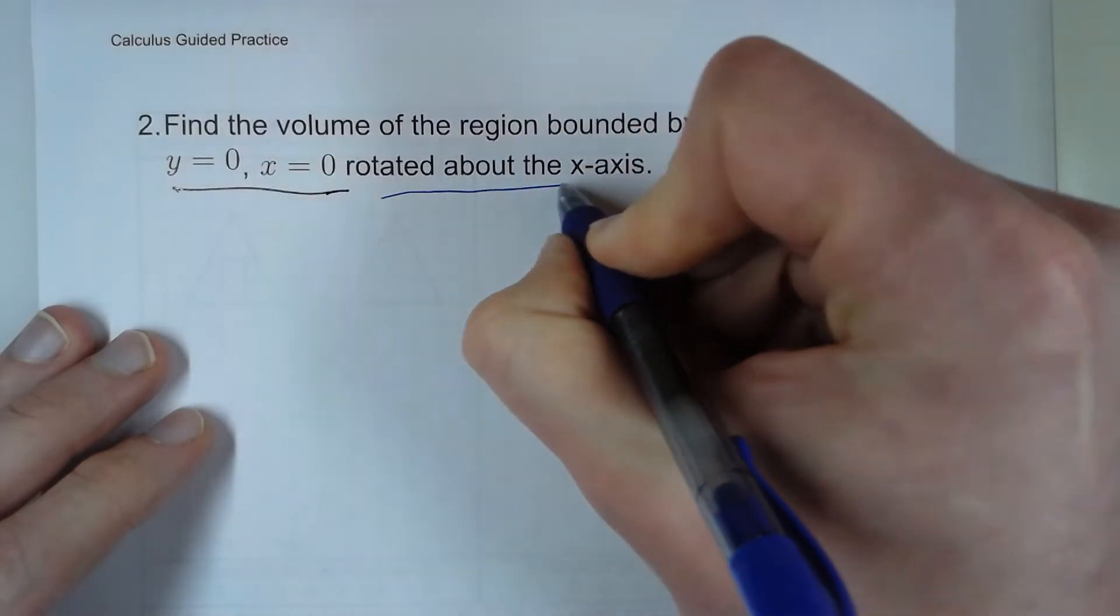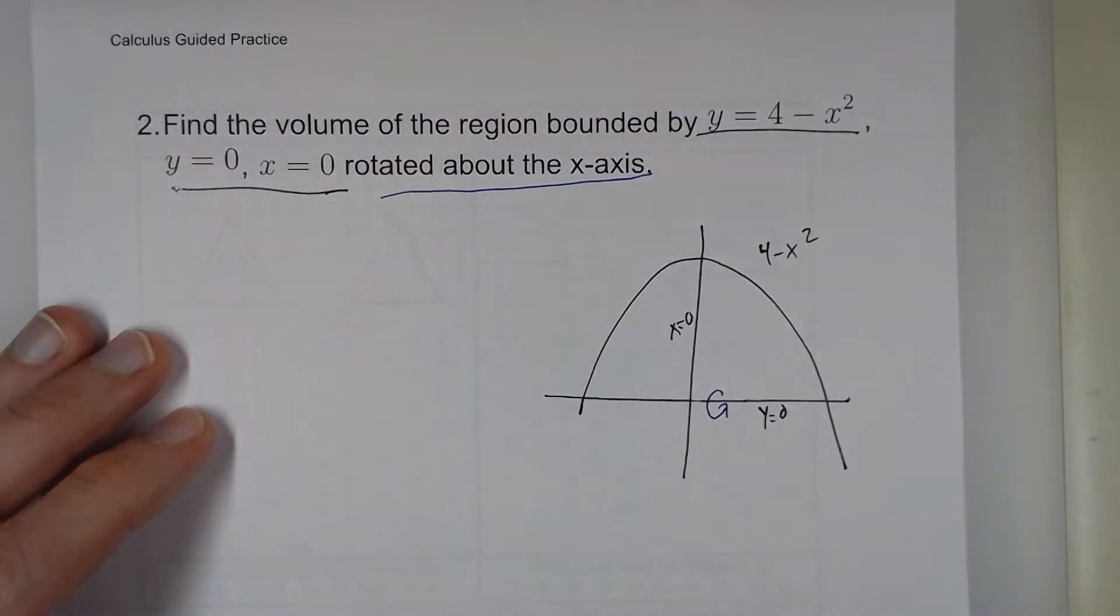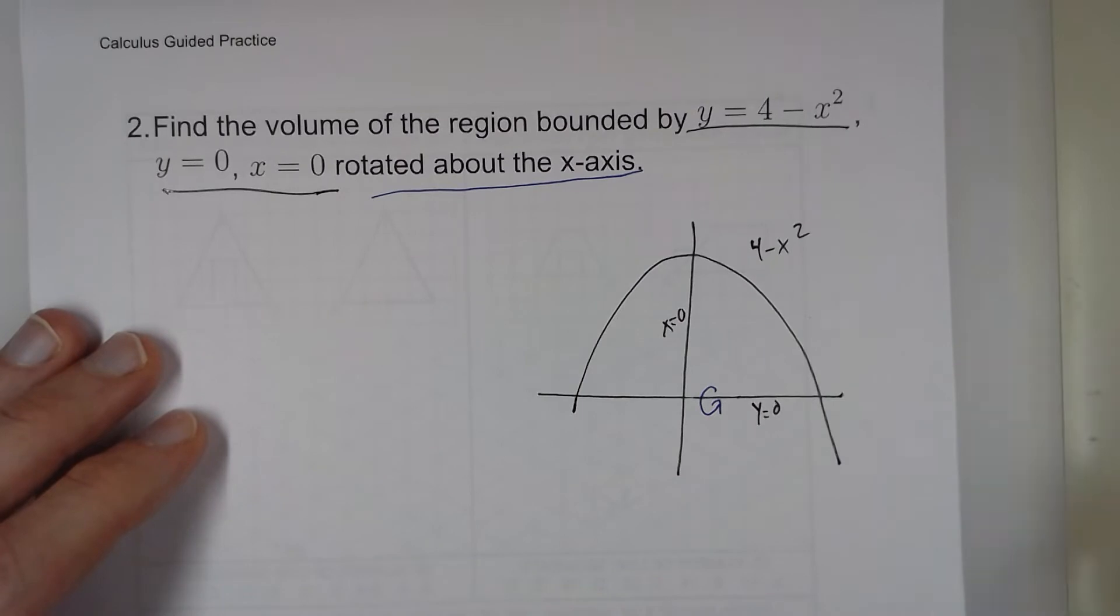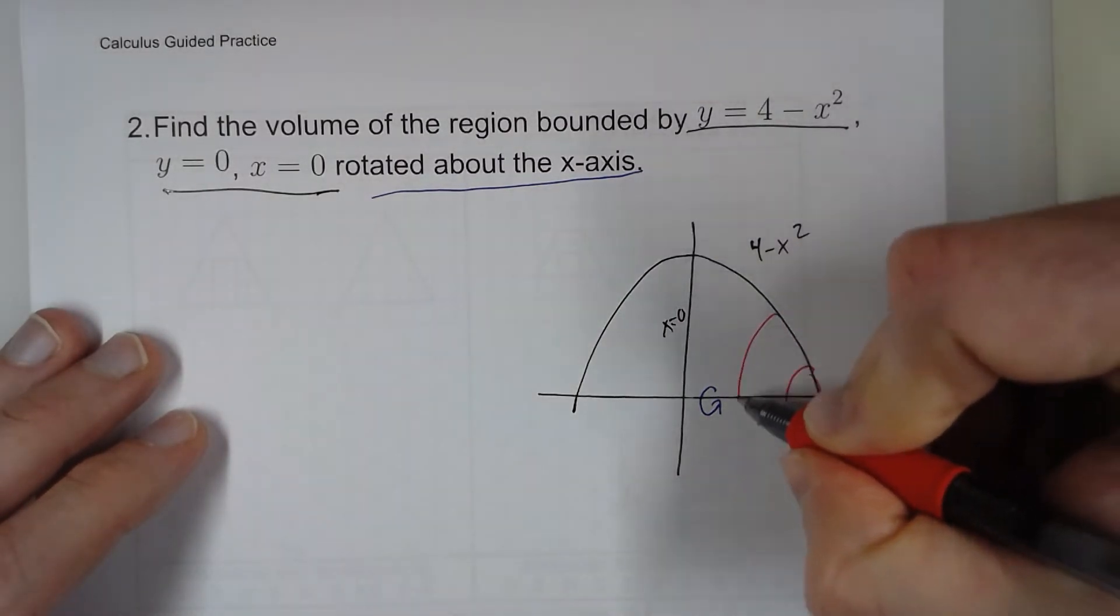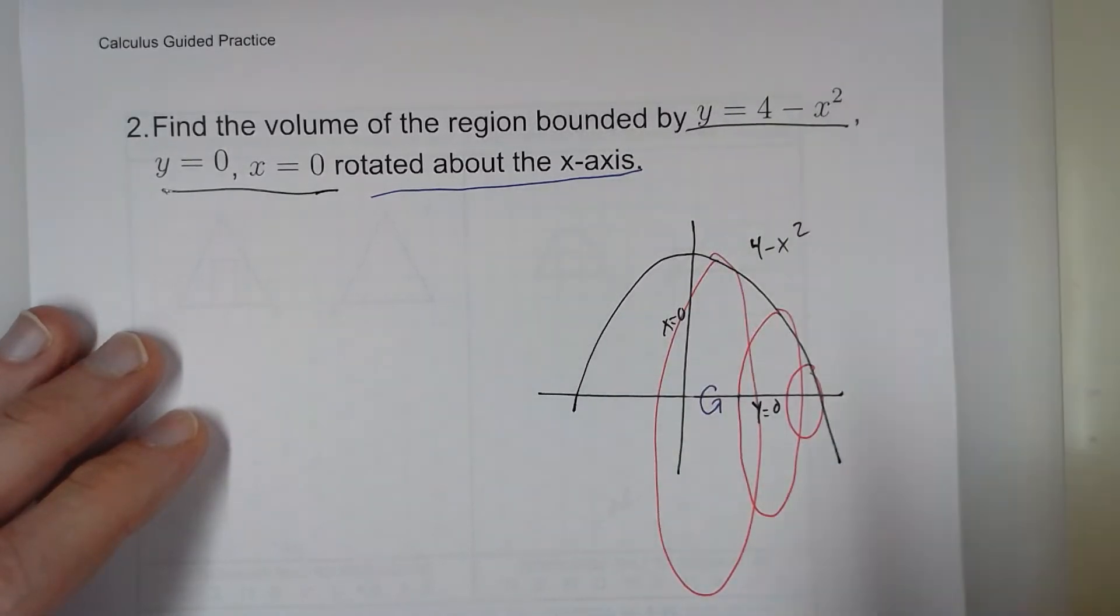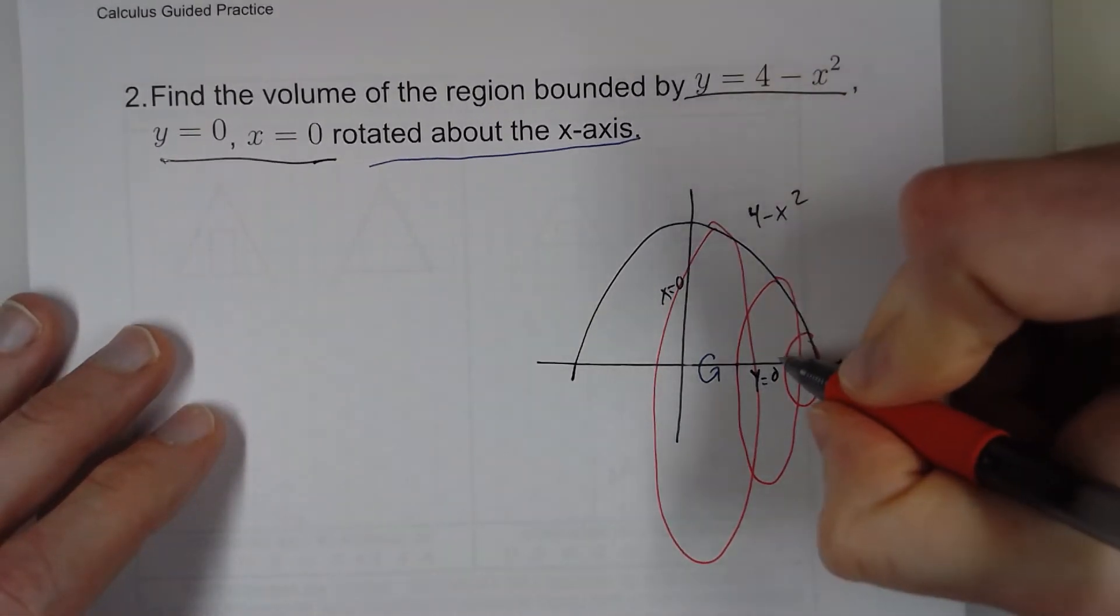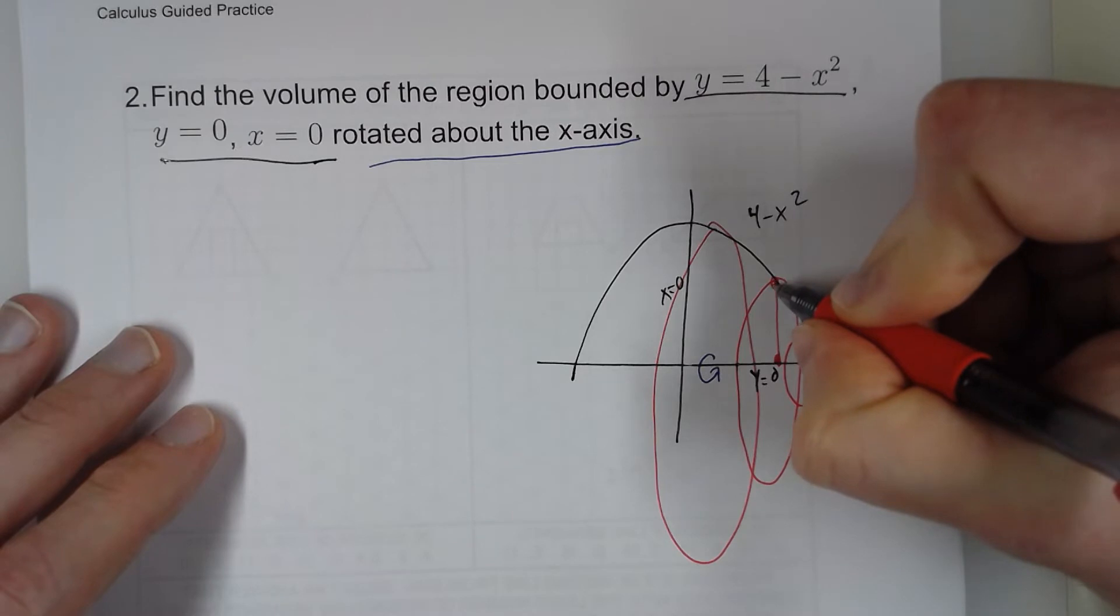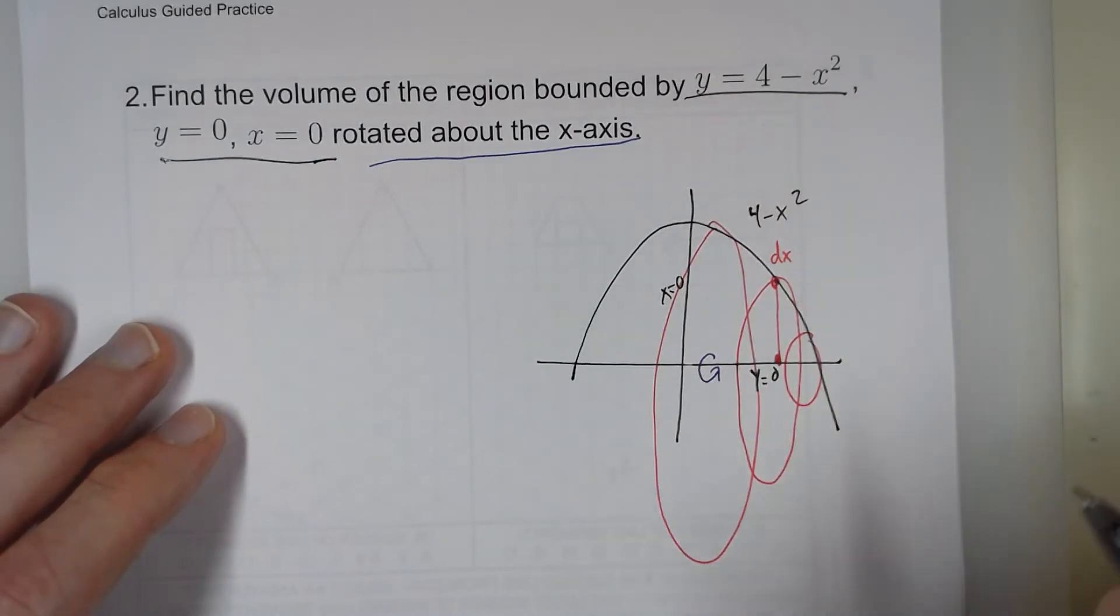Next thing it says is that it's rotated about the x-axis. So here it's rotated this way. So we're going to be looking like this. So again, our cross-sections are circles. And our radius is going to go from here to here. And each circle is going to have a thickness of dx.